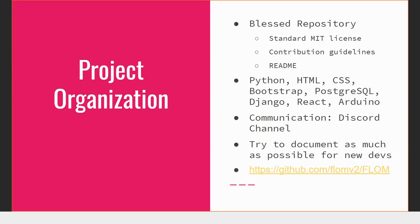For our project organization, FLOMv2 was forked from the original FLOM repository. FLOMv2 is set up as a blessed repository, so every new feature — pretty much every contributor had their own branch this semester, and those get merged. Our tech stack: the web app was a Django Python framework, the frontend was HTML and CSS, and we're looking to integrate React for our graphs.